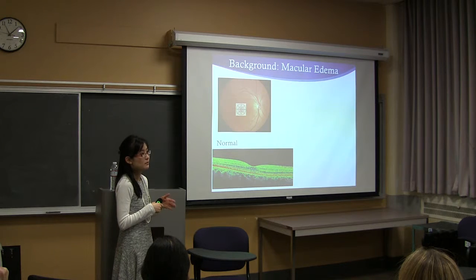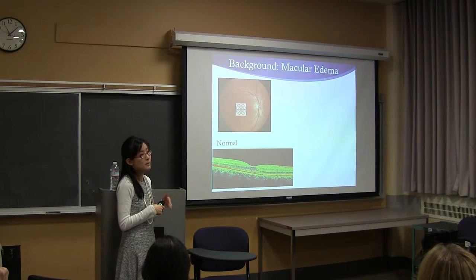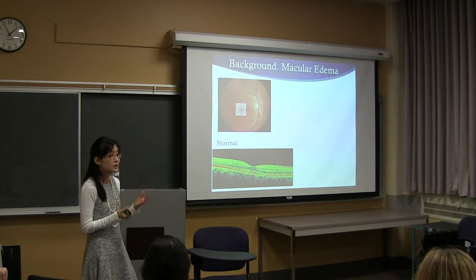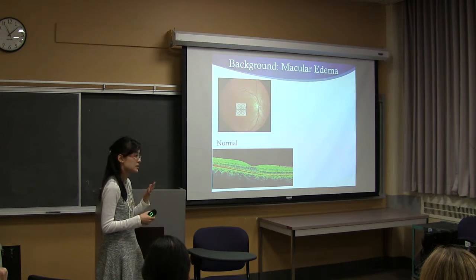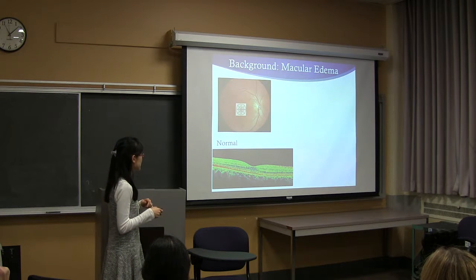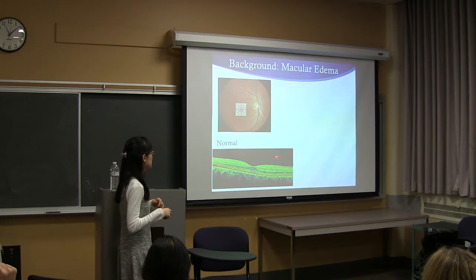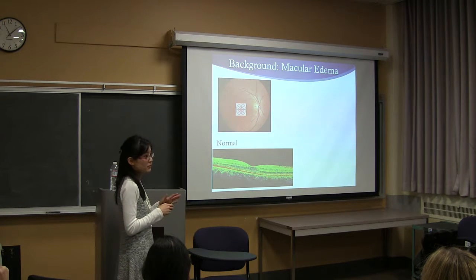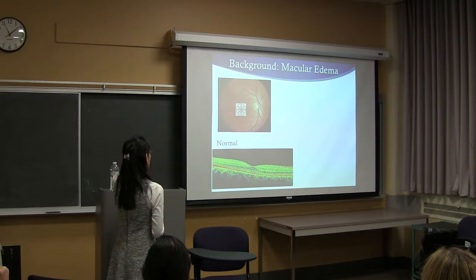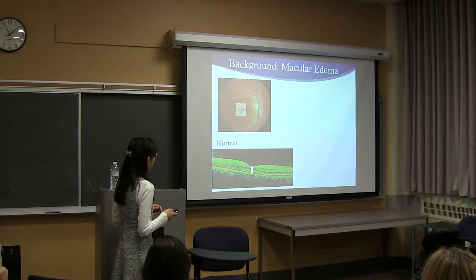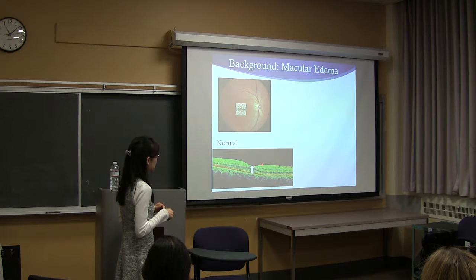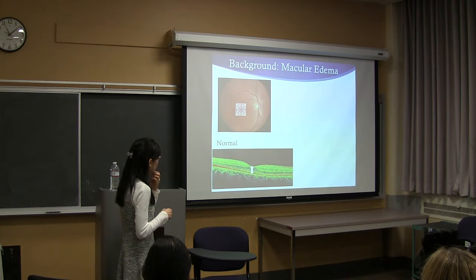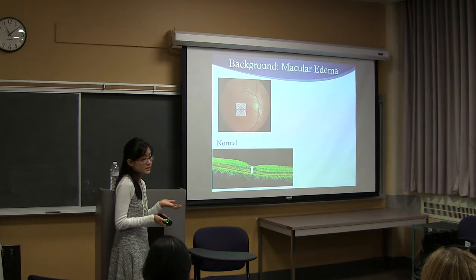You can see macular edema visually on clinical exam, but many times it's hard to see. The OCT, or Optical Coherence Tomography, is a very useful tool to both diagnose and clinically follow macular edema. This image here is an OCT scan — a cross-sectional image of the macula. The center of depression is the fovea, and this is a very healthy, beautiful-looking macula. This cross-sectional thickness of the fovea can be a pretty good indicator of the severity of the edema.